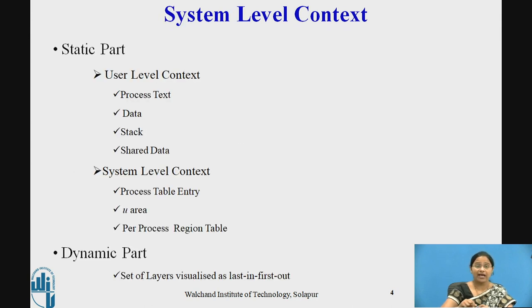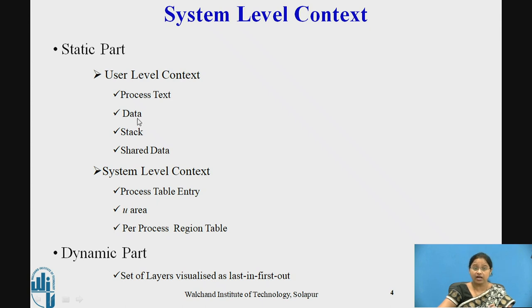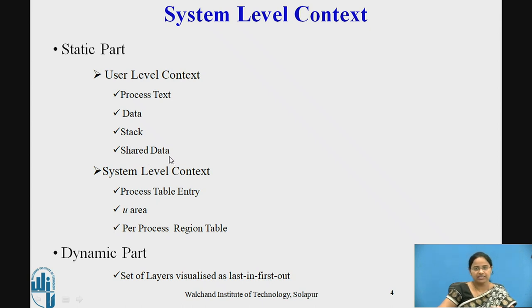System level context contains information about the system which is used by the process. It contains two parts: static part and dynamic part. The user level context contains process text — some set of instructions — the actual data used by the process during execution, the stack (either user stack or kernel stack), and shared data. Some part of the memory is shared among multiple processes, and whatever data is shared comes under the static part.